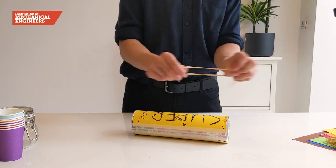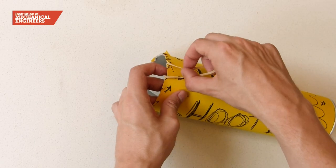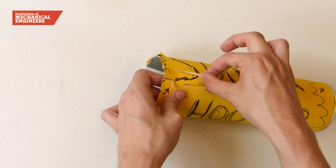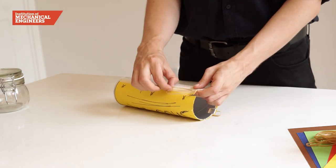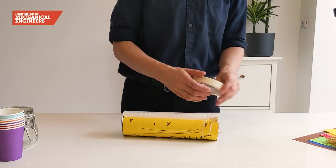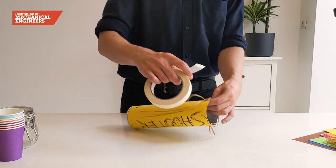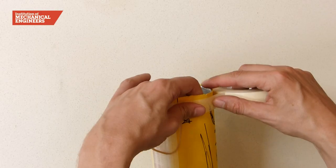Take your elastic band and slot it into the notches you have just created. To help secure the elastic band in place, wrap masking tape around the top of the tube.